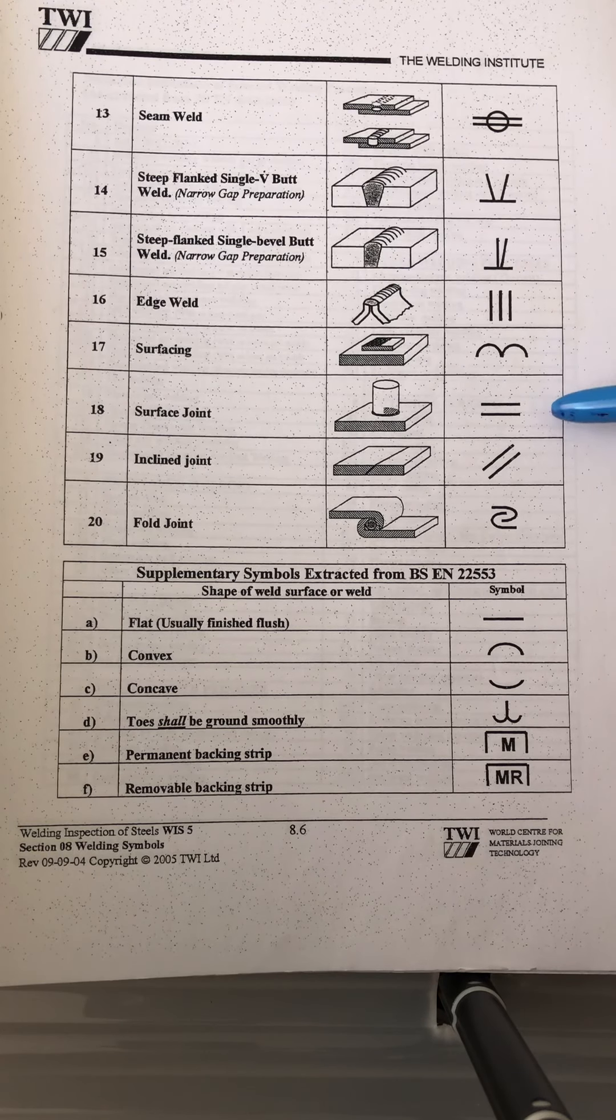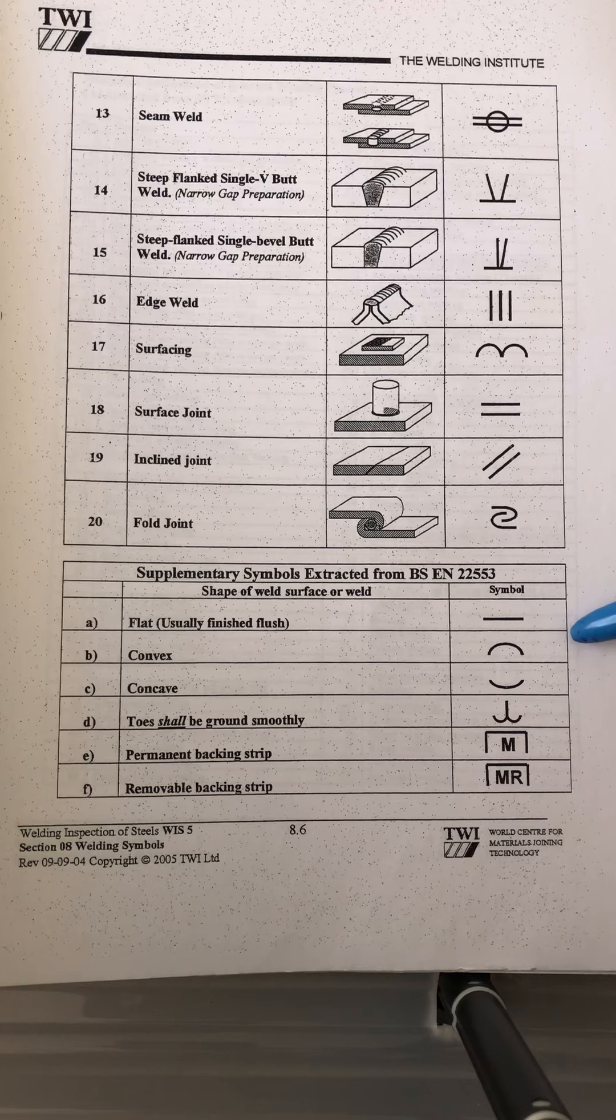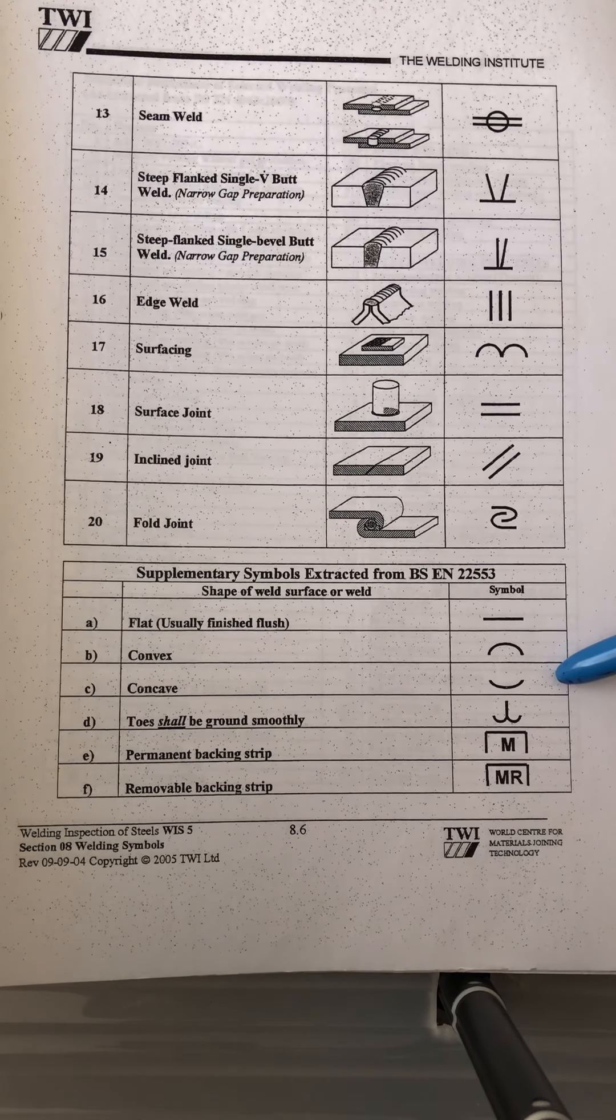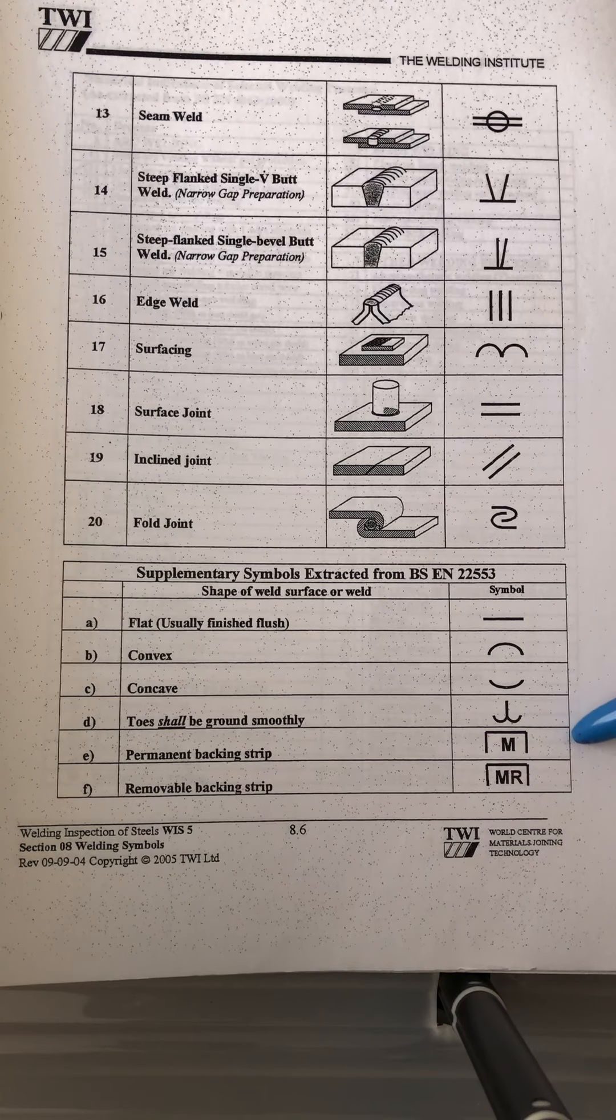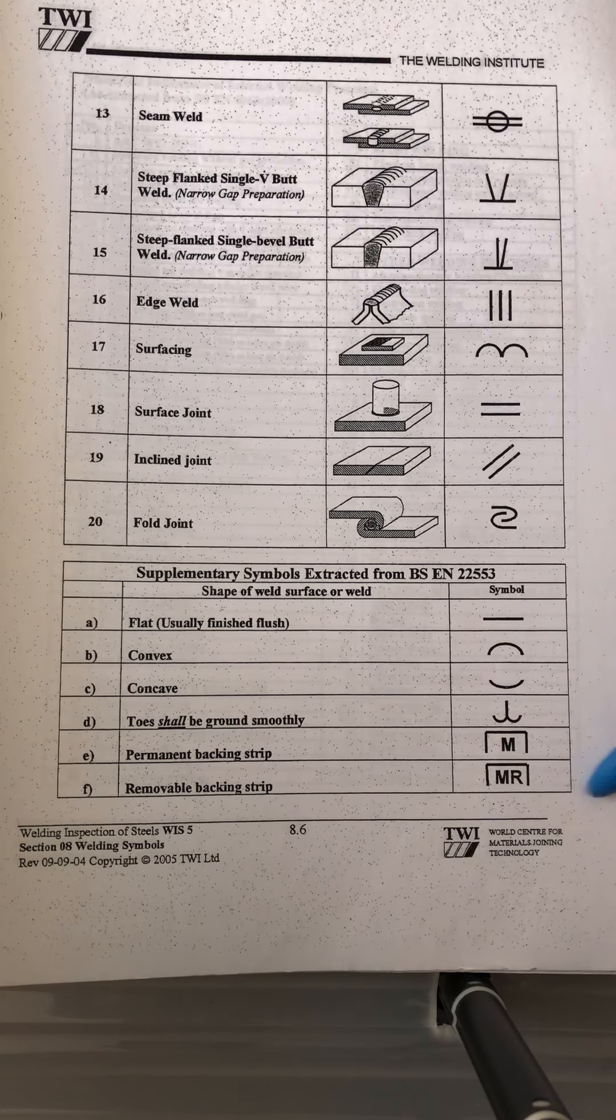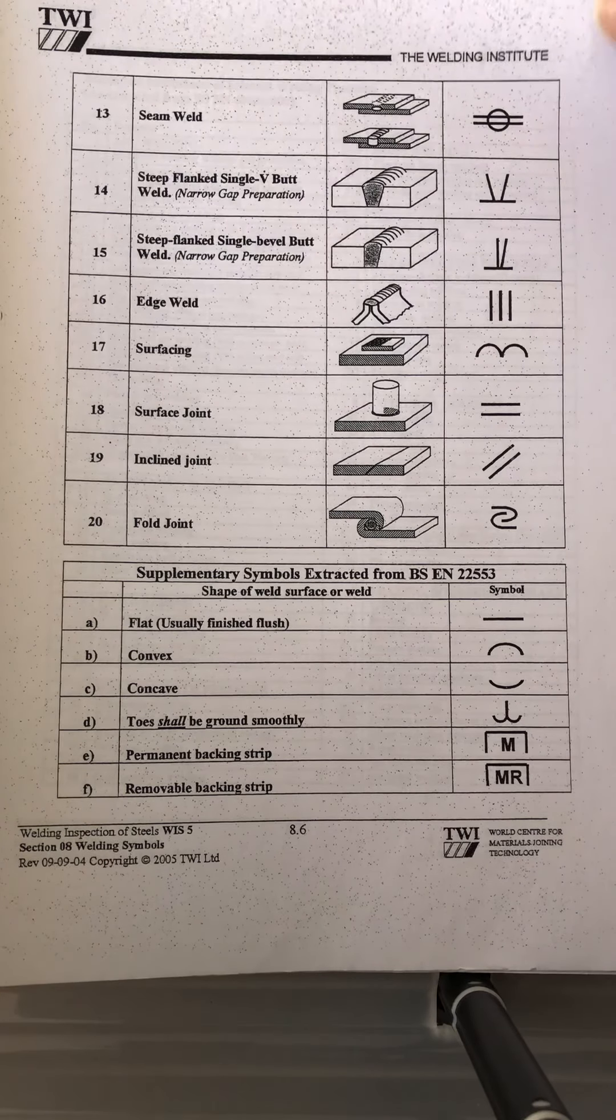Surface joint, inclined joint, and fold joint. There's another supplementary symbols for flat, for convex, for concave, for toe, for permanent backing strip, and removable backing strip - removable and permanent.